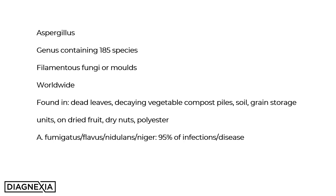It has a predilection for dead leaves, decaying vegetables, compost piles, soil, grain storage units, and tends to grow on dried fruit, dried nuts, and indeed even polyester. The species most implicated in infectious disease affecting humans are Aspergillus fumigatus, flavus, nidulans, and niger.